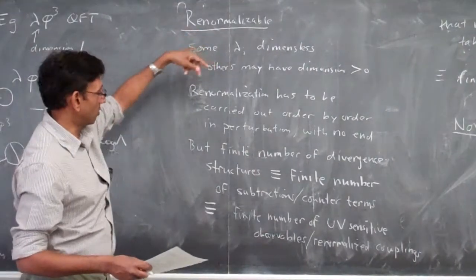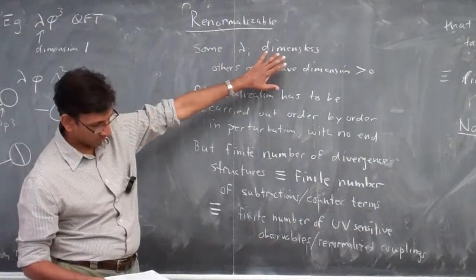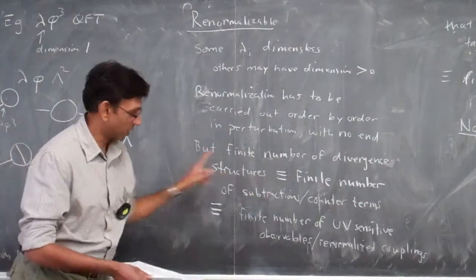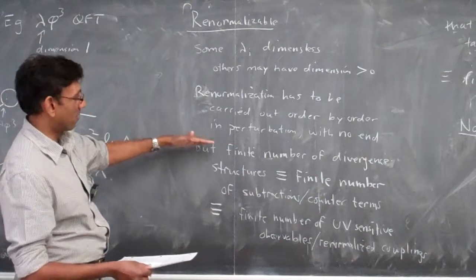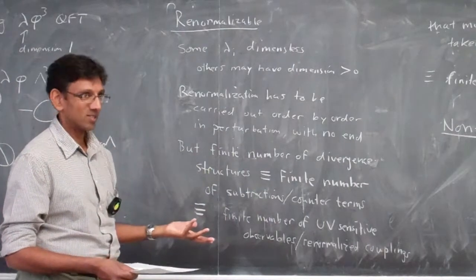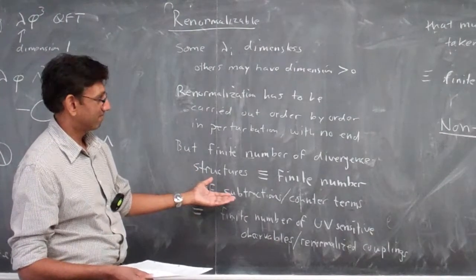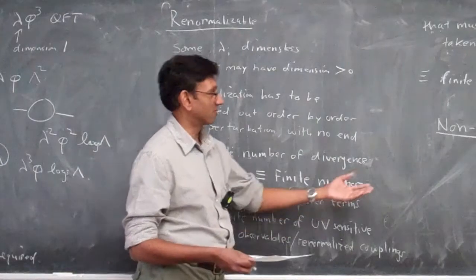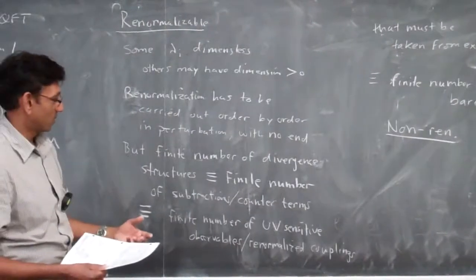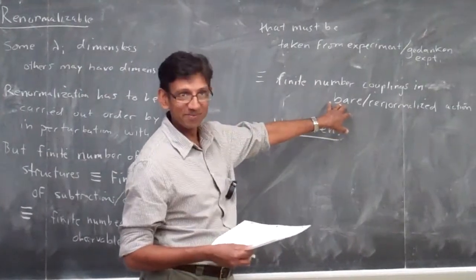So far I've insisted that all coupling constants have scale dimension greater than or equal to zero. The following are equivalent when the theory has couplings with dimension ≥ 0: there are a finite number of divergent structures, which means a finite number of ways the theory depends on the far UV, hence a finite number of inputs, hence the renormalized action has a finite number of terms — and since the bare action equals the renormalized action plus counterterms, the bare action also has a similar finite form.